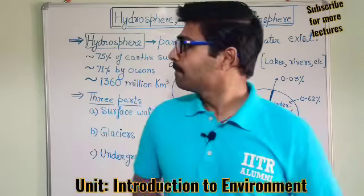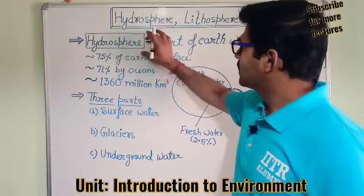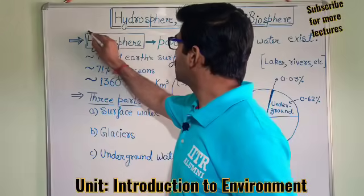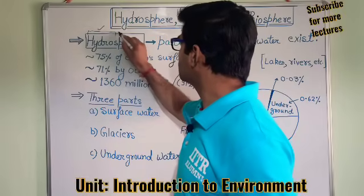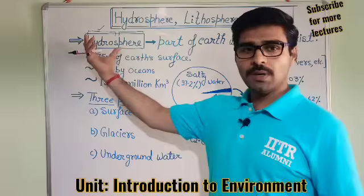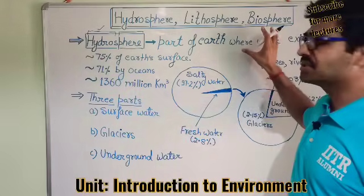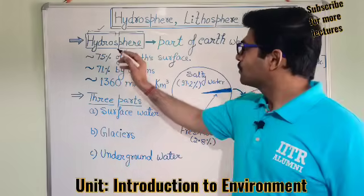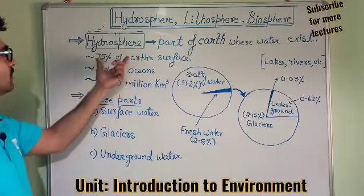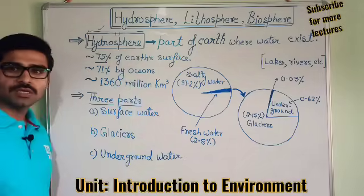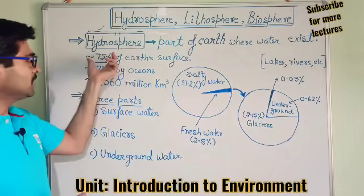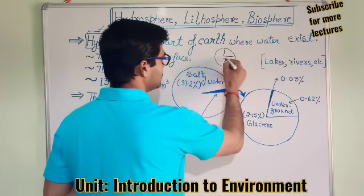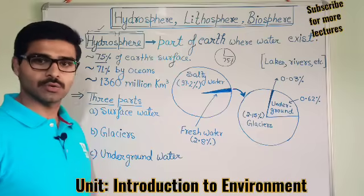Let us start with the second segment of the environment, that is Hydrosphere. 'Hydro' means water and 'sphere' means boundary. So the part of Earth where all the water exists is known as Hydrosphere. Hydrosphere covers about 75% of the Earth's surface, meaning 75% of the total Earth surface is covered by water.